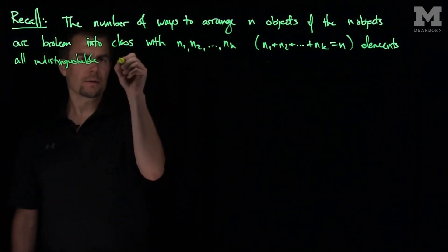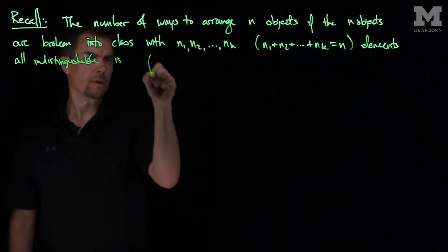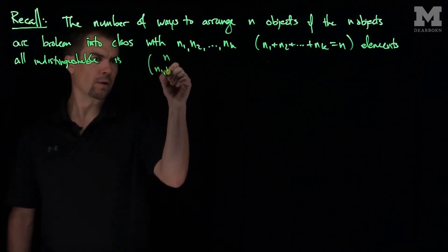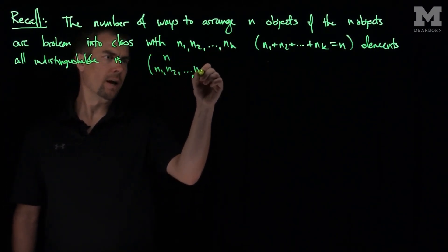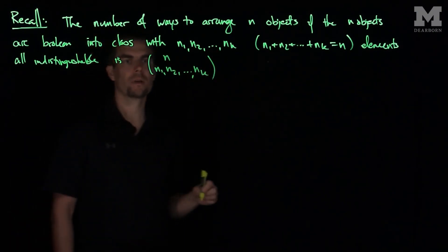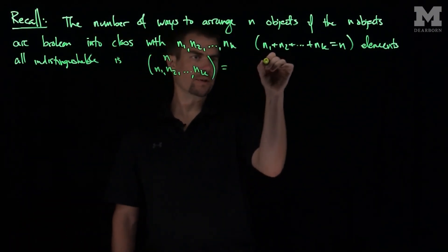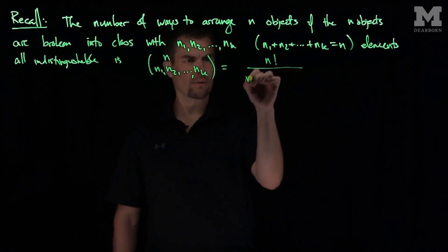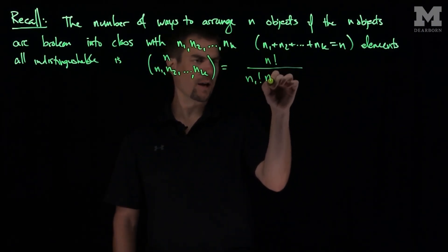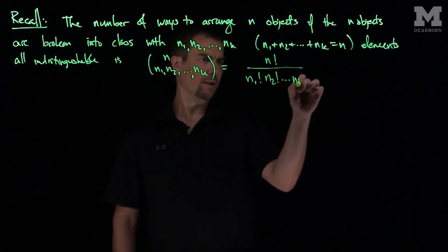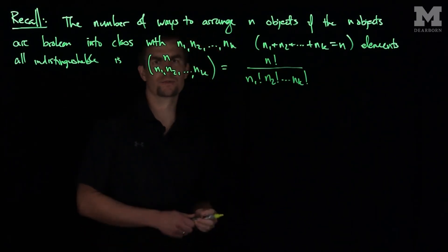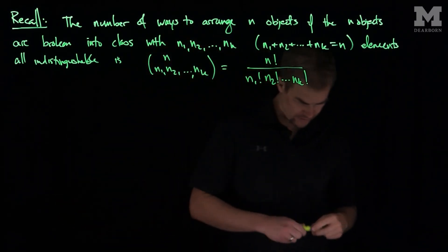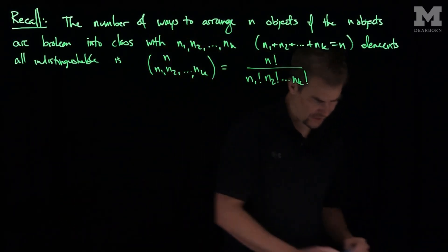The answer is n choose n1, n2, nk, and you can compute this as n factorial over n1 factorial, n2 factorial, nk factorial. And so let's see some examples of how we would use this. So here's the first example.